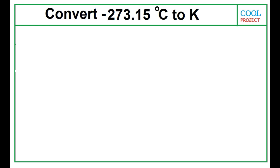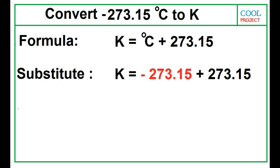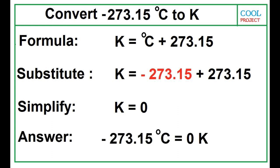Convert negative 273.15 degrees Celsius to Kelvin. Use this formula: K is equal to degrees Celsius plus 273.15. Substitute the given value, which is negative 273.15 degrees Celsius. Then simplify. Negative 273.15 plus 273.15 is equal to 0. The answer is negative 273.15 degrees Celsius is equal to 0 Kelvin.